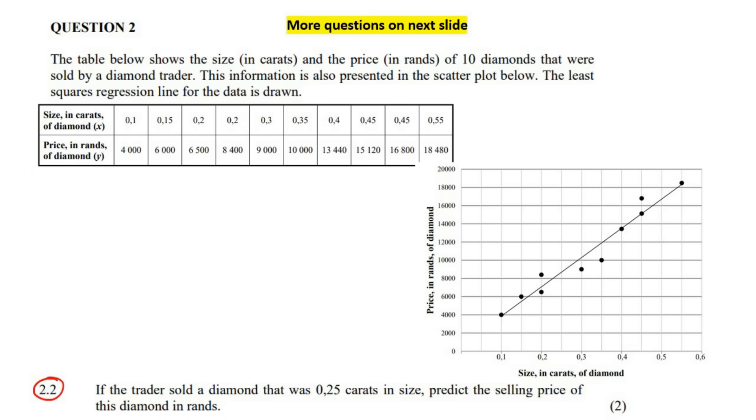This question says if the trader sold a diamond that was 0.25 carats, predict the selling price. Remember that this is the selling price, and X is the size in carats. We can use our formula now. I looked at the memo as well and they want the specific value, so you're going to use your equation that you generated in the previous question. You're going to say 634.38 plus 32189... and then the X is your carats, which is the 0.25. Type that on the calculator, and that would give you 8681.70 rand.